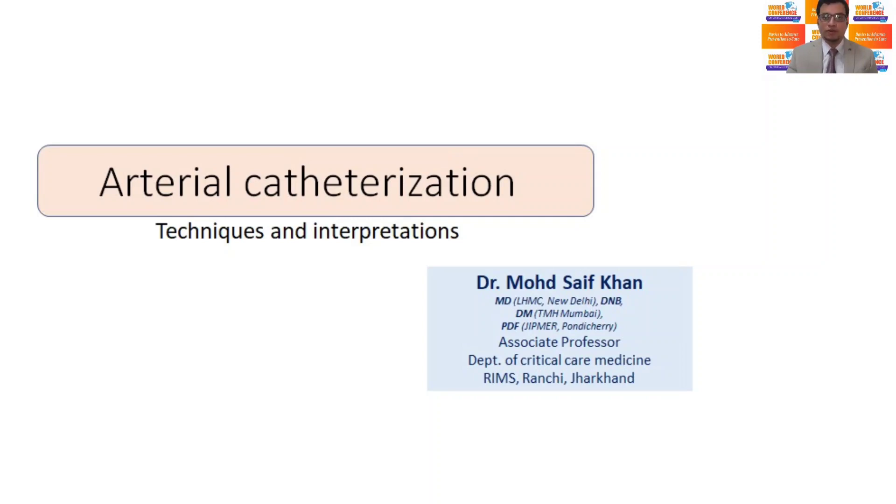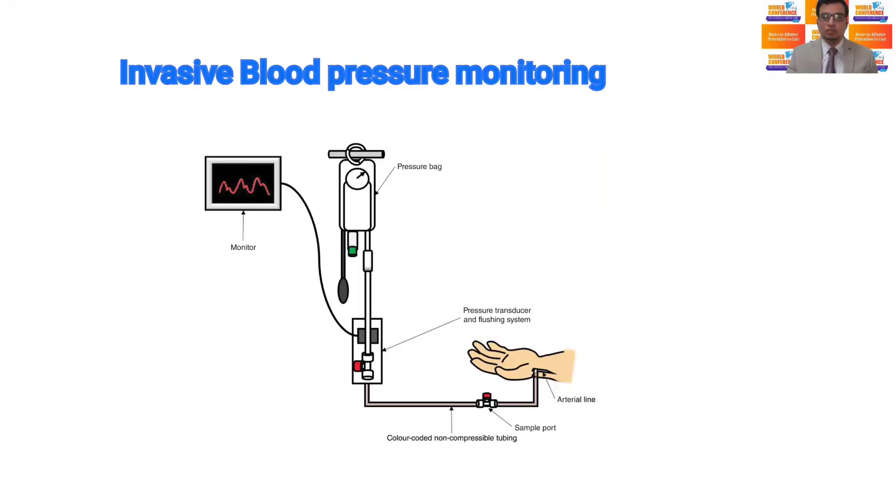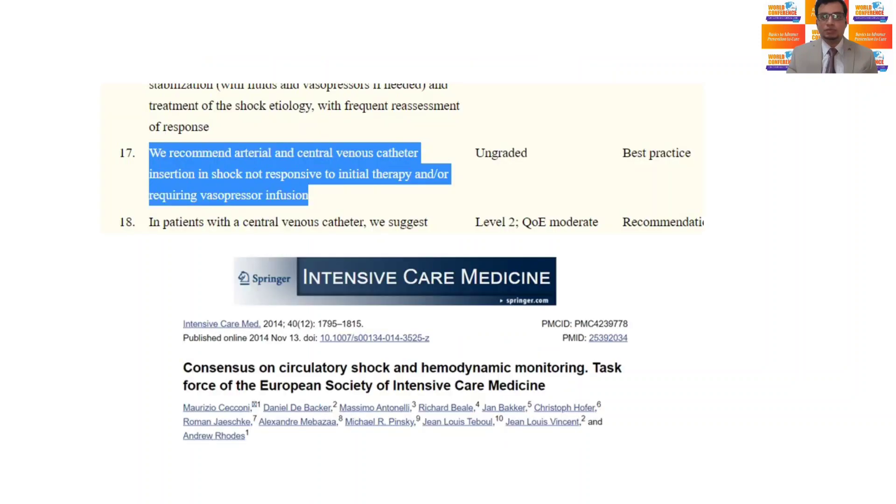As you are all aware, invasive arterial blood pressure monitoring using arterial catheterization is one of the commonly performed bedside procedures in the ICU during shock, when non-invasive blood pressure monitoring becomes unreliable.